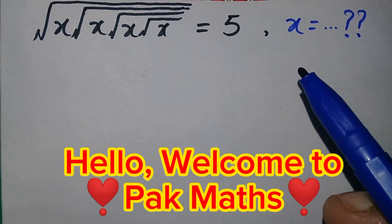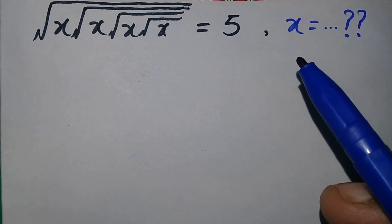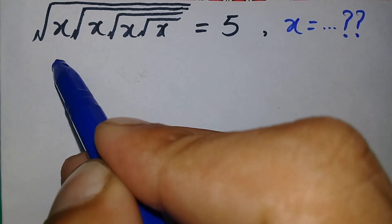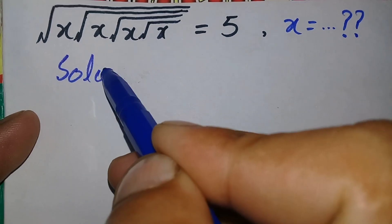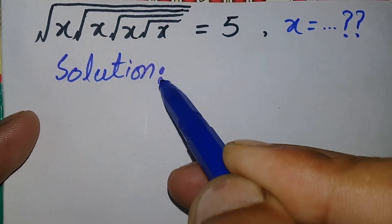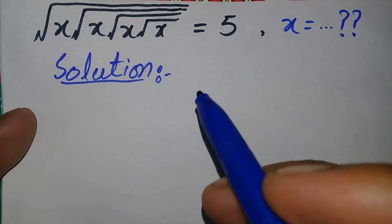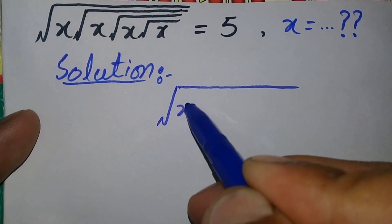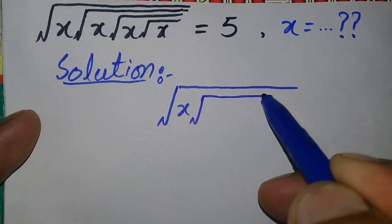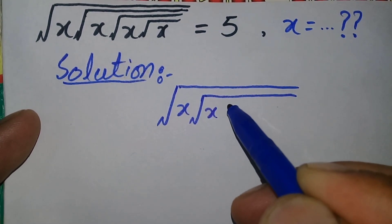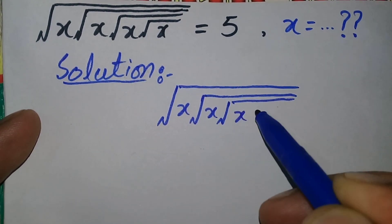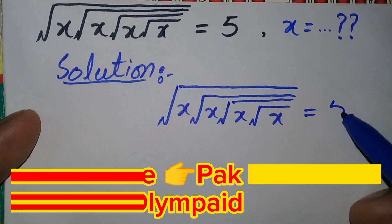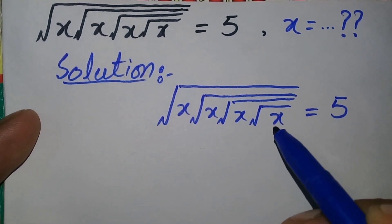Hello, welcome to Parkman's. In this video we will learn how to solve this nice square root problem. Let's start. We will write the solution and the question again: square root of x times square root of x times square root of x times square root of x is equal to 5. In this equation we will find the value of the variable x.